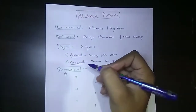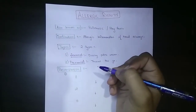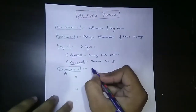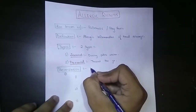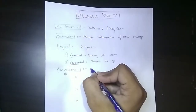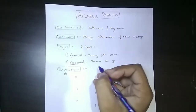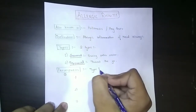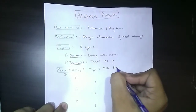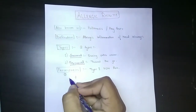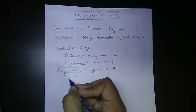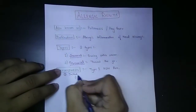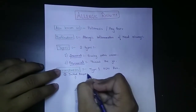Now coming to the pathology of allergic rhinitis: it is a type one hypersensitivity reaction. There are two pathogeneses of allergic rhinitis. Number one is the initial response or acute response, which occurs within a minute.